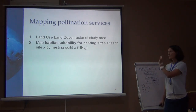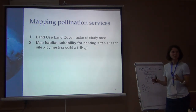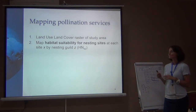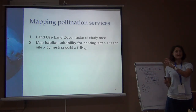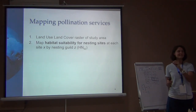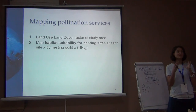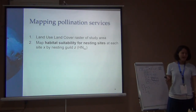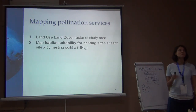This is kind of the outline of what we're doing, and I'll have picture examples so just hang on if I'm going too fast. In step two, you're mapping the suitability of all of your land use, land cover classes as nesting sites — you're transforming that landscape into how bee-friendly these land covers are as nest sites for wild bees. If you have multiple guilds or groups of bees, you can do that step for each guild.